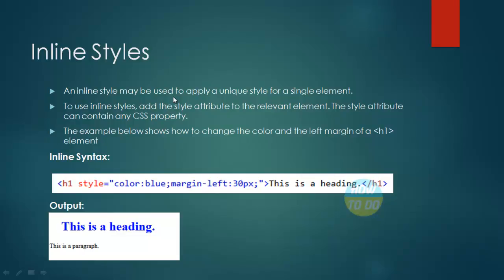Now let's understand inline styles. An inline style may be used to apply a unique style for a single element. To use inline styles, add the style attribute to the relevant element — the style attribute can contain any CSS property. The example below shows how to change the color and left margin of an h1 element using syntax like: h1 style="color:blue; margin-left:30px". The net takeaway is that inline styles let you change the style for a specific line in the complete page.